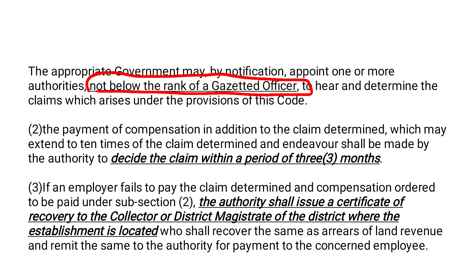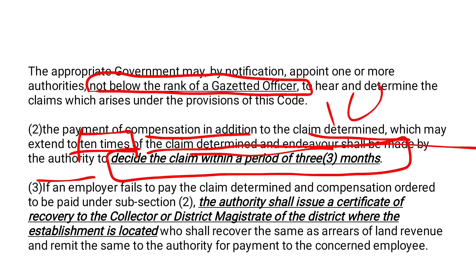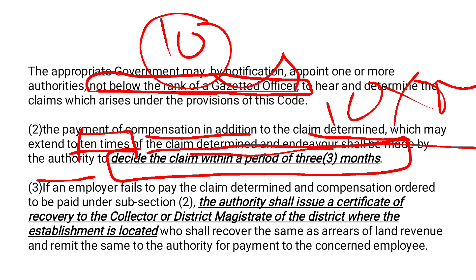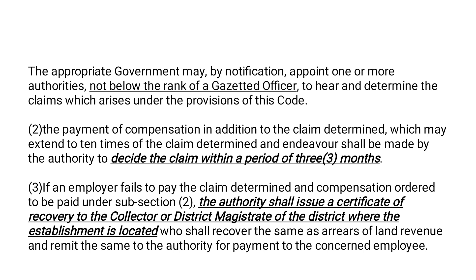The second point is the payment of compensation in addition to the claim determined, which may extend up to 10 times of the claim determined. The authority shall decide the claim within a period of three months. The simple point to remember is that the claim which arises shall be 10 times more — just imagine the claim is 10 rupees, then this claim can extend to a maximum of 10 times, that is 100 rupees maximum. Whenever a claim arises, it should be settled by the specified authority within a period of three months.